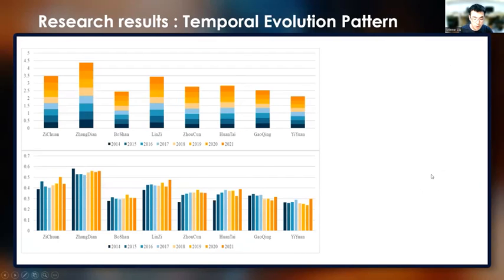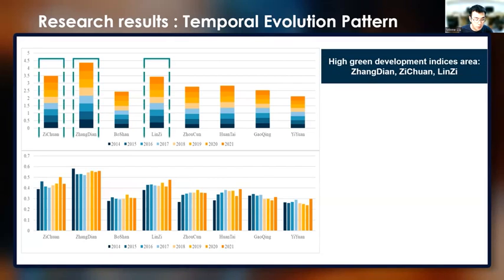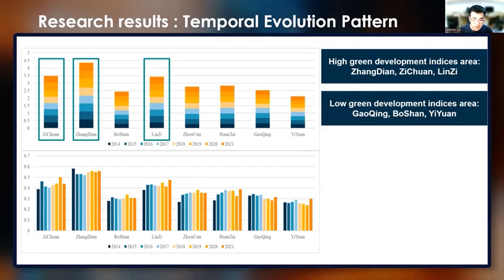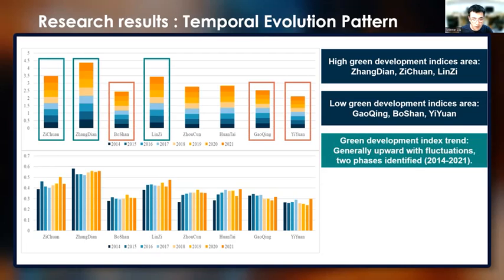According to the results, the green development level of districts in Zibo City from 2014 to 2021 generally shows an upward trend, albeit with significant annual fluctuations. In terms of total quantities, Zhangdian, Linzi, and Zichuan have higher green development indices. On a temporal scale, the green development level of Zibo City can be divided into two phases, with 2018 as the boundary.